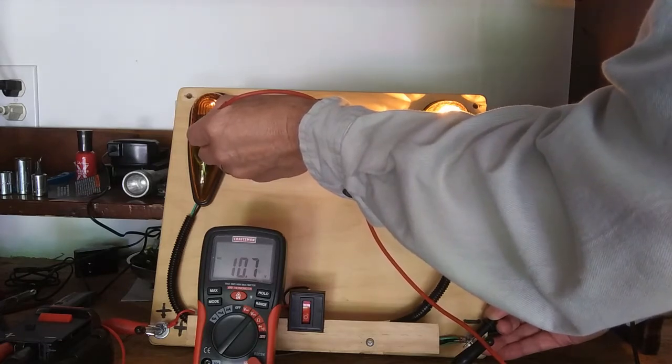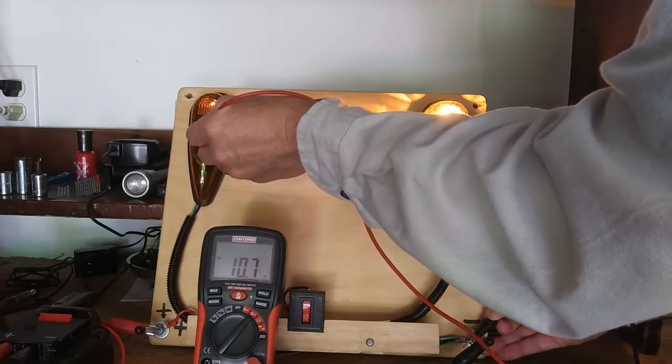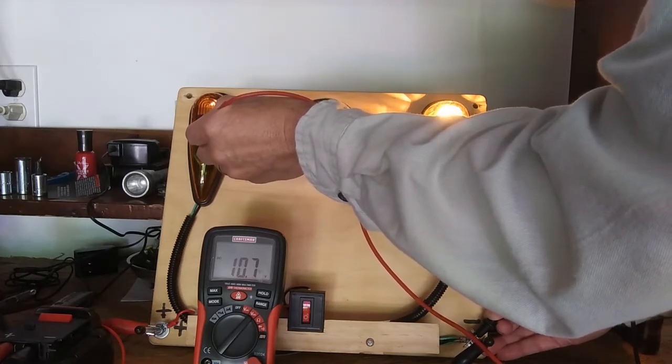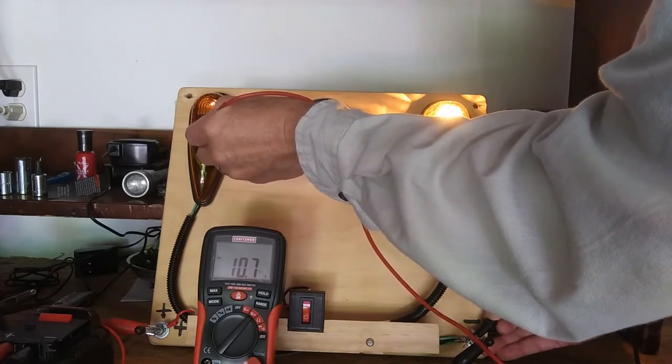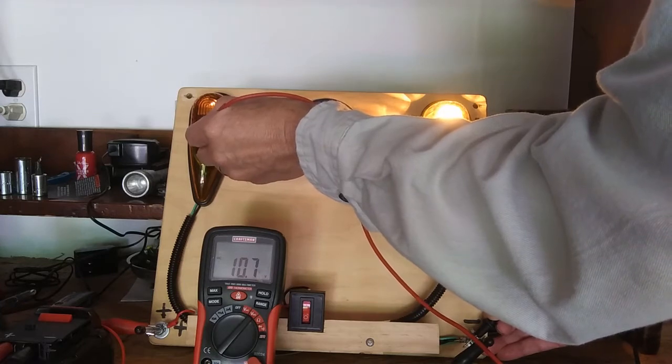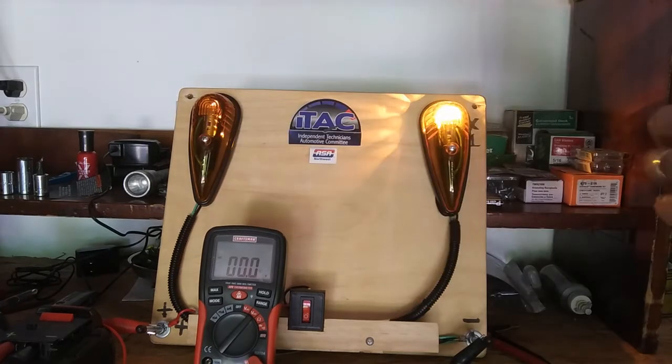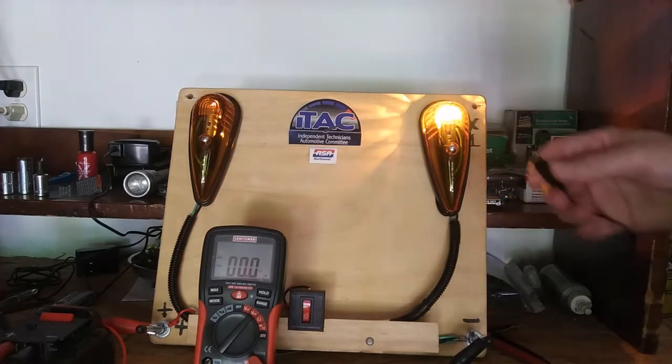The ground circuit is consuming almost 11 volts, and if I have a good ground, my reading should be no more than 0.1 volts, or one-tenth of a volt, and that's causing the dim bulb.